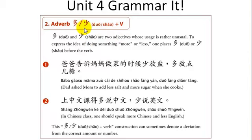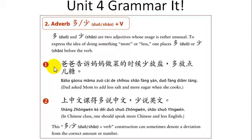You saw 少 being used as 'don't use so much salt' — 少放盐. You could also say 多放盐 for 'use extra salt.' The way they're used can be hard to translate. For example: 爸爸告诉妈妈做菜的时候少放盐，多放点糖 — dad asked mom to add less salt and more sugar when she cooks.